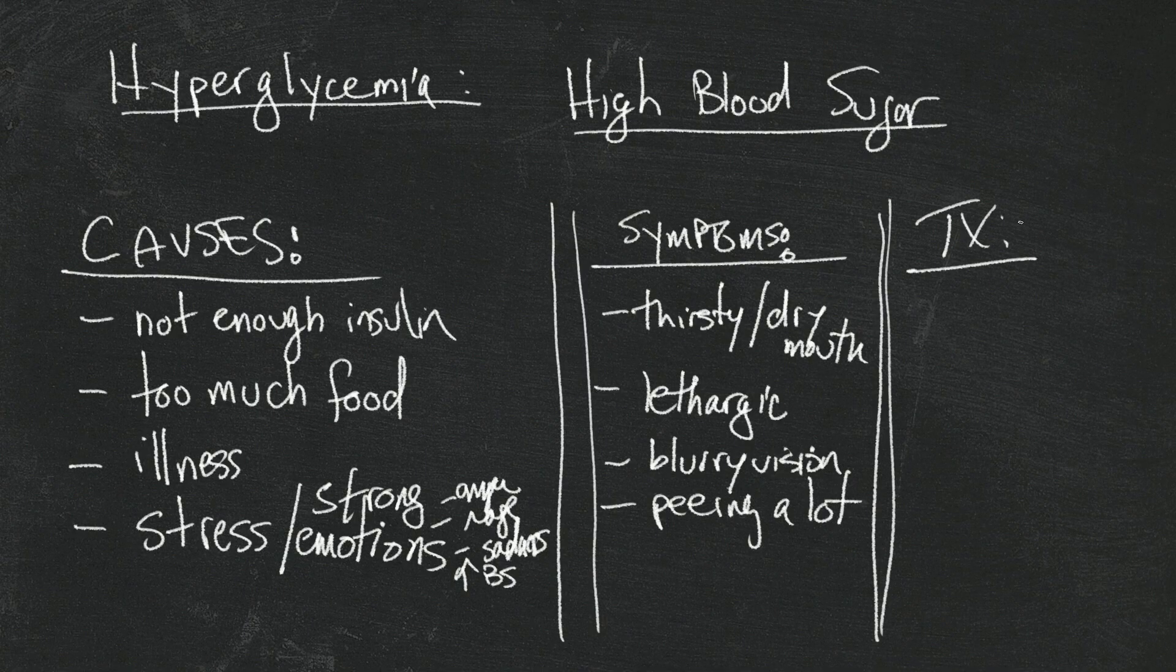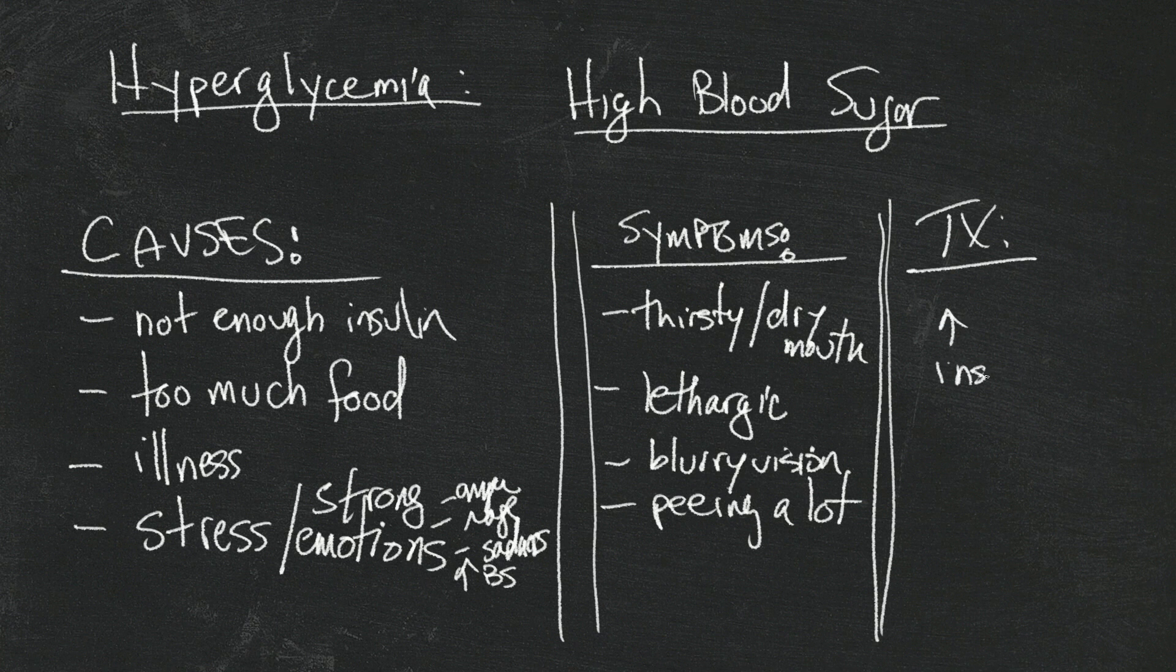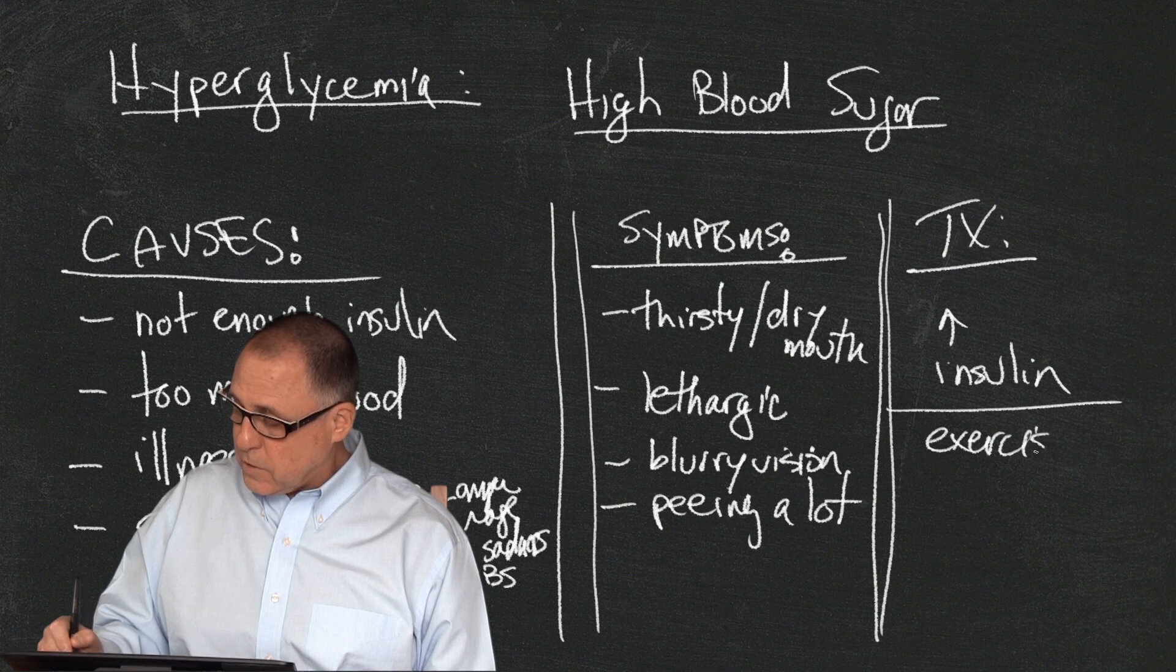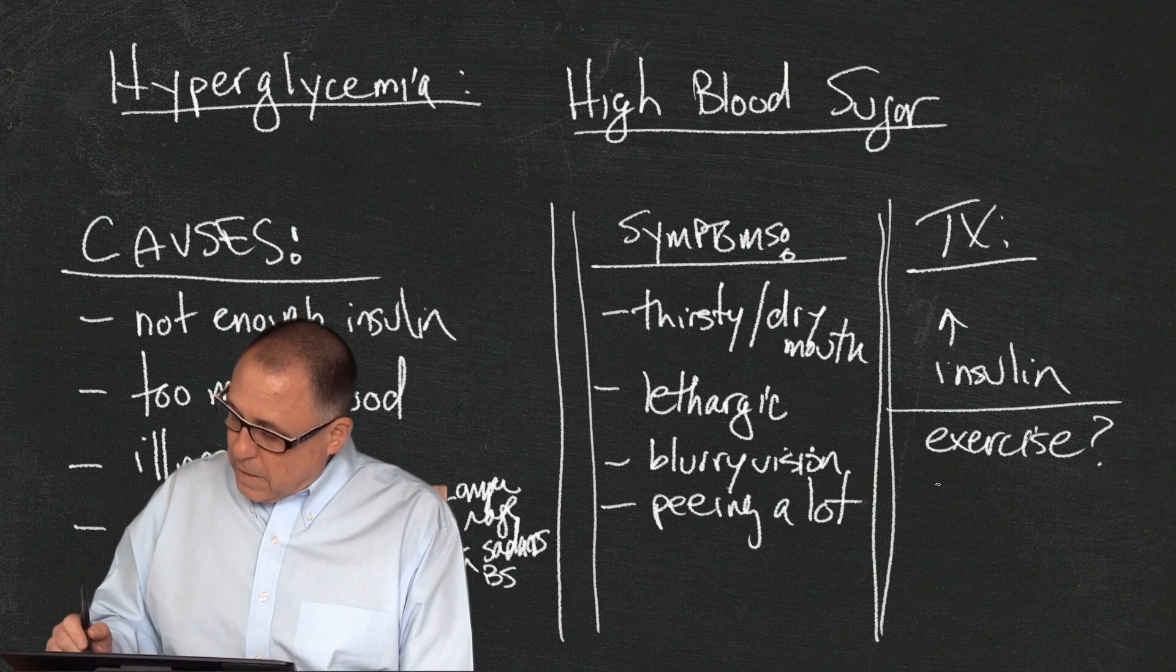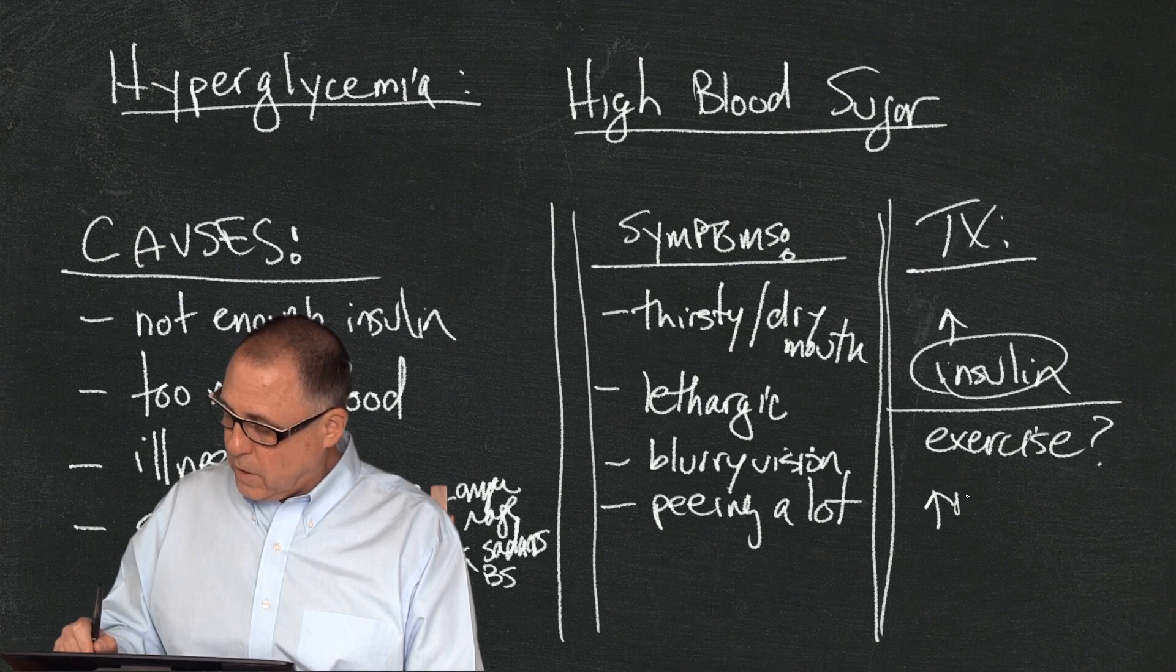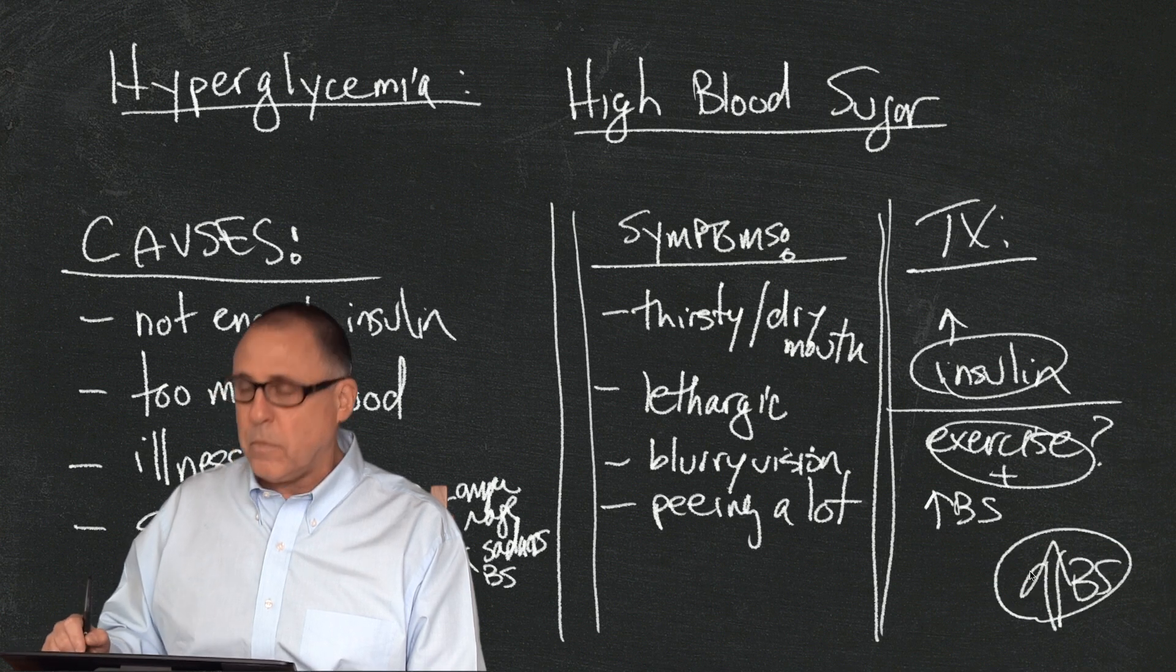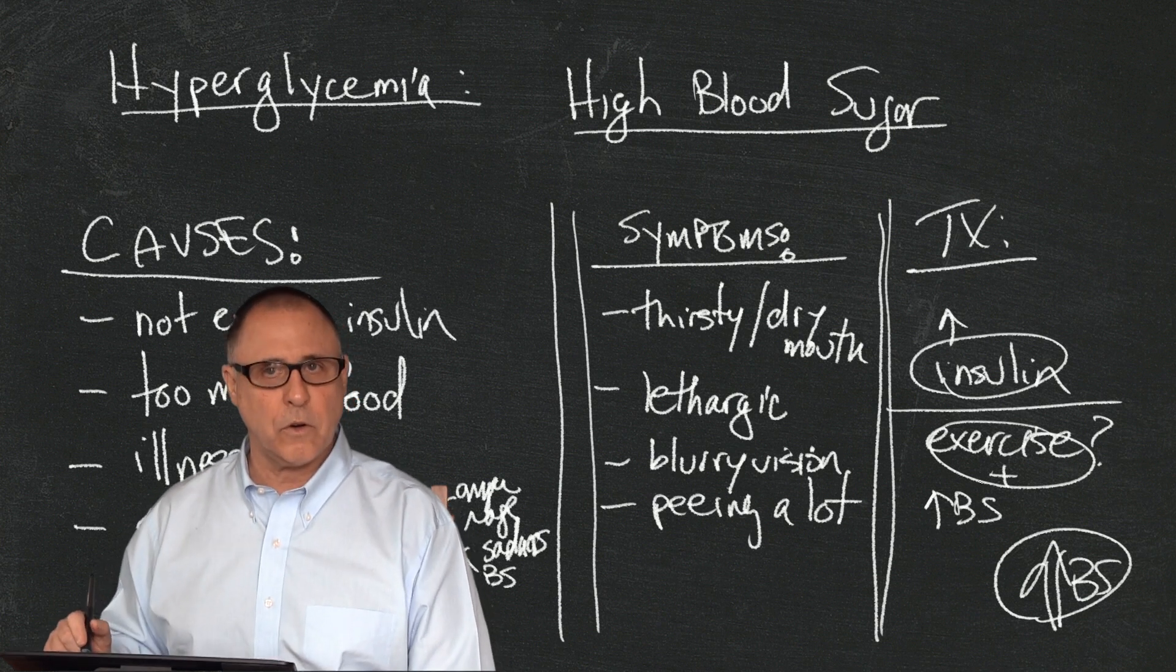Maybe peeing a lot, because the body's trying to dump the extra sugar. And the one treatment, and really the best treatment for high blood sugars on the spot and also to prevent them from happening, is more insulin. Now some people say, well, if exercise brings my blood sugar down, why don't I exercise a little bit more? Well, the thing about that is that you have to be careful about that.